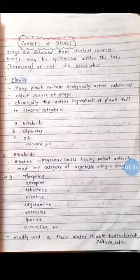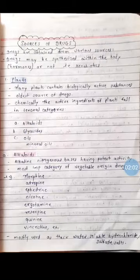Examples of alkaloids include morphine, atropine, ephedrine, nicotine, ergotamine, reserpine, quinine, vincristine — write down two to three examples such as morphine, atropine, and ephedrine. Alkaloids are mostly used as their water-soluble hydrochloride or sulfate salts.